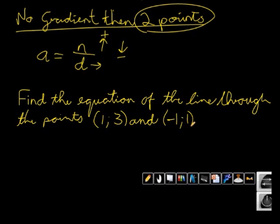So in this one, it says find the equation of the line through the points 1, 3 and negative 1, 1.